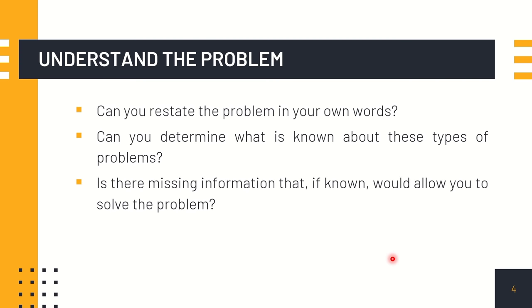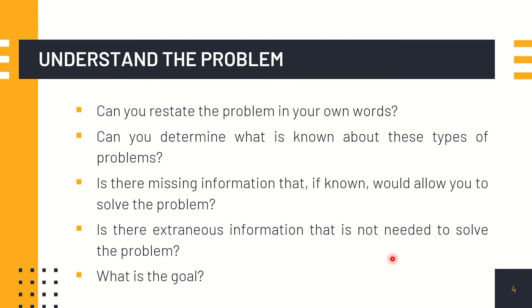Is there missing information that, if known, would allow you to solve the problem? Is there extraneous information that is not needed to solve the problem? So extraneous information is included in the problem that we don't need to pay attention to. And what is the goal of the problem? So that is the first step. You need to understand the problem.